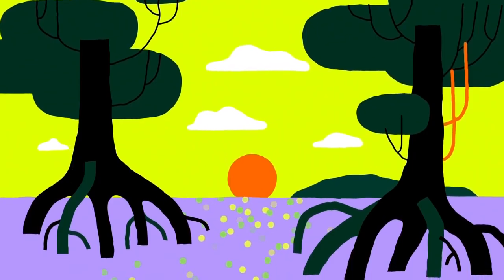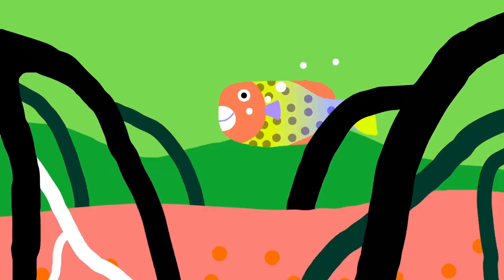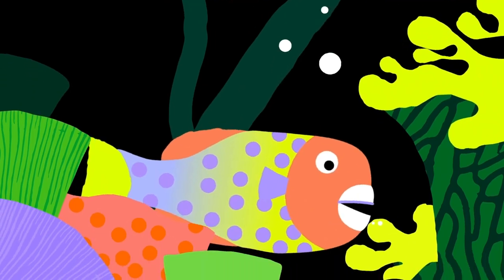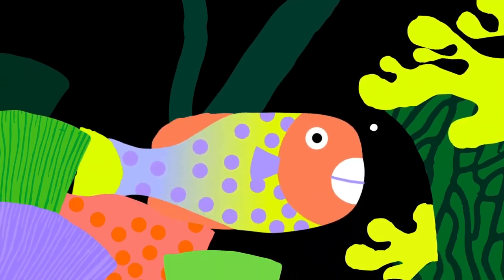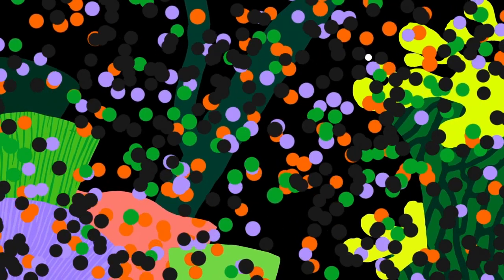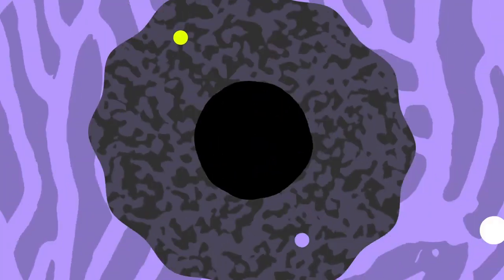Like mangroves. They're a birthing ground for parrotfish, and those little guys grow up to clean algae off coral reefs. Without them, reefs would suffocate and fish would stop gathering.